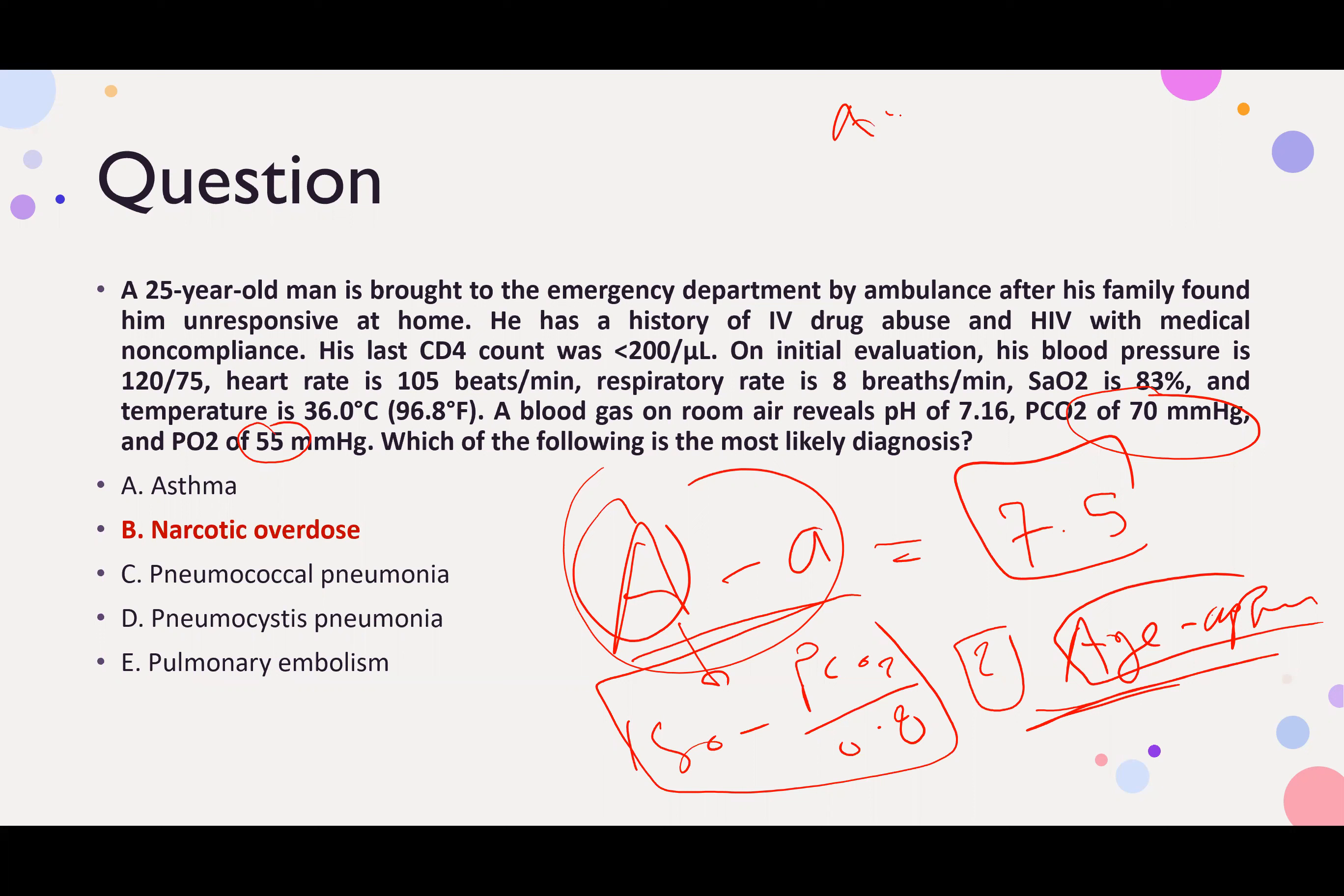The comparison is age divided by 4 plus 4. So for this patient, age 25 divided by 4 plus 4 equals 10.25.